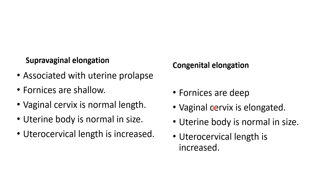In congenital elongation, the fornices are deep because the vaginal part of the cervix is elongated and the rest — including the uterus and supra-vaginal part — are intact at their normal positions. So the fornices remain deep and normal. This is the first differentiating point on vaginal examination. In supra-vaginal elongation, the vaginal cervix is of normal length; in congenital elongation, the vaginal cervix is elongated.